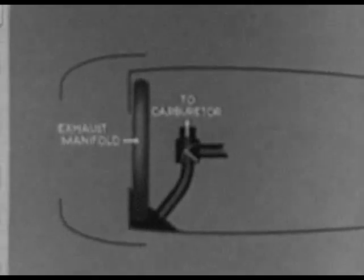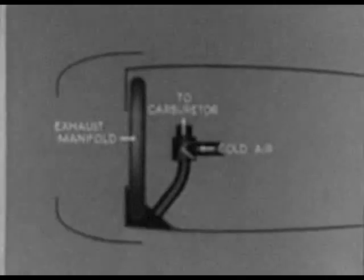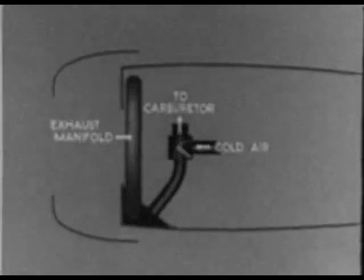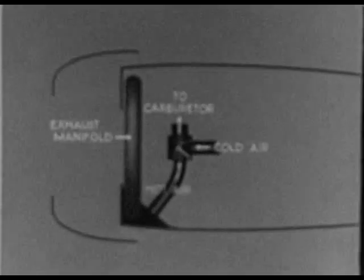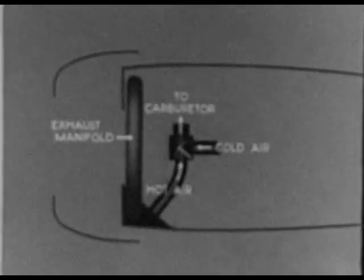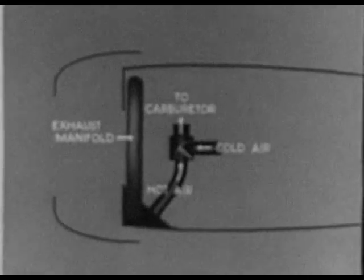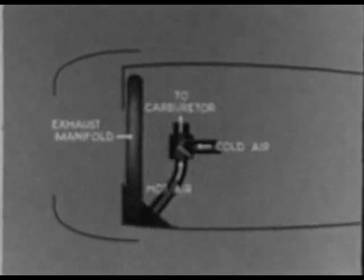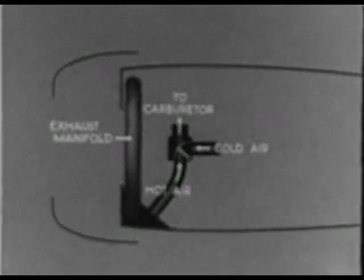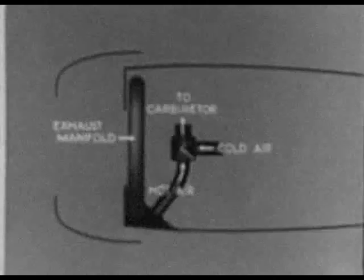The heat supplied is controlled by a valve which admits, in the desired proportions, unheated air and hot air from the chamber formed around the exhaust manifold. Control of the heat supplied is very vital.